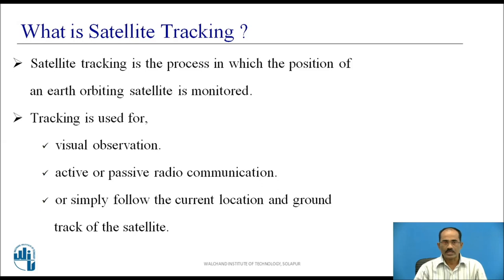What is satellite tracking all about? It is a process in which the position of an orbiting satellite is monitored. Its various uses are visual observation, active or passive radio communication, or simply to follow the current location and ground track of the satellite.